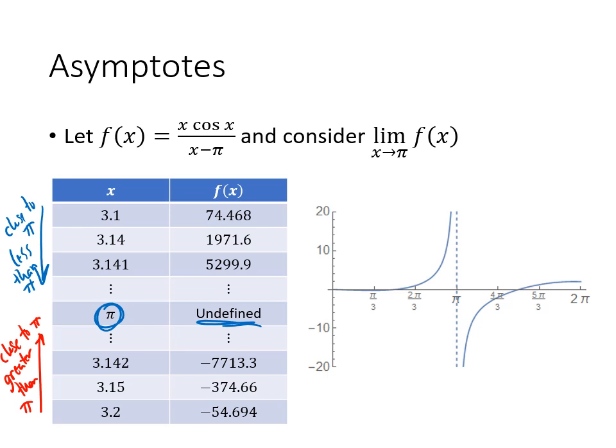But what I'm seeing is that my y values, 74, 1,971, 5,300, those numbers are getting bigger and bigger and bigger. And so what I'm seeing in my graph is that my y values are shooting up through the roof.